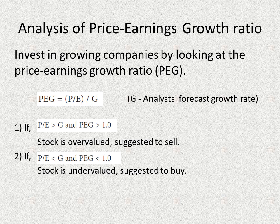The last strategy is based on the price-earnings growth ratio. If you invest in growing companies, just look at the price-earnings growth ratio. The PEG ratio is calculated by dividing the PE ratio by the growth ratio. If the PEG ratio is greater than 1, it means the PE ratio is greater than the growth ratio. In this case, your suggestion is to sell because the stock is overvalued. But if the PEG ratio is less than 1, it means the PE ratio is less than the growth ratio. In this case, your suggestion is to buy because the stock is undervalued.